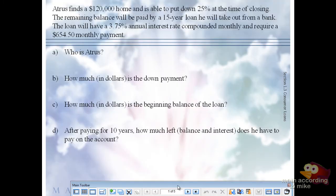Atrus finds a $120,000 home and is able to put down 25% at the time of closing. The loan will be paid off in 15 years.